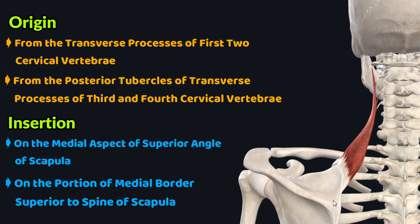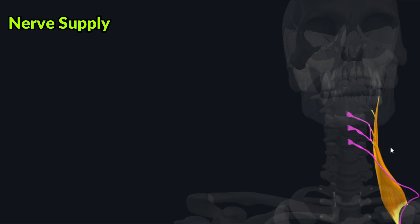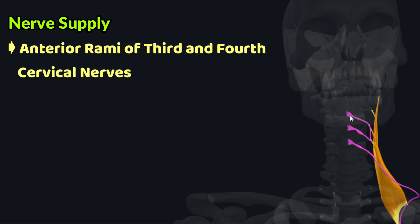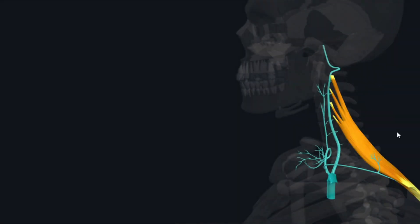In terms of nerve supply, the levator scapulae muscle is supplied by the anterior rami of the third and fourth cervical nerves and the dorsal scapular nerve, which originates from the C5 cervical nerve root.